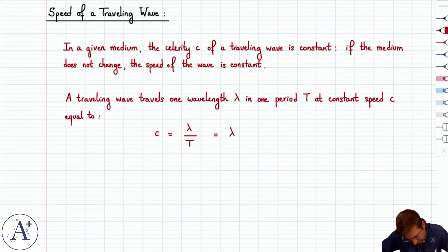That, of course, means that it's also lambda times f because 1 over T is f. And if you substitute properly, you'll find that it's omega over k, which is the angular frequency over the wave number.